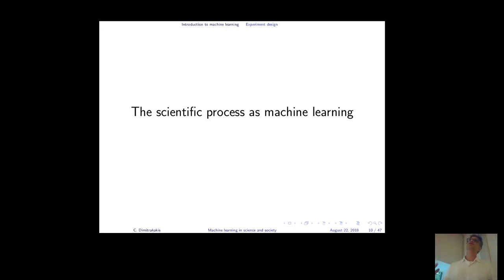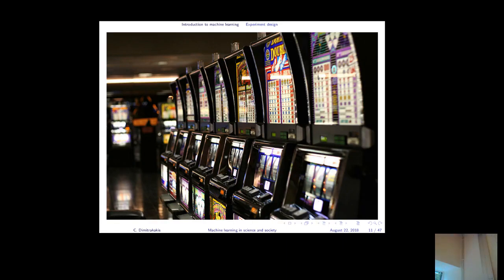How can you view machine learning as a scientific process? Let's think about something fun first — going to a casino. Say there's one machine where you can make money, but you don't know which one. With, say, six slot machines and a thousand coins, the question is: how many coins do you spend before you decide to switch to a different machine?